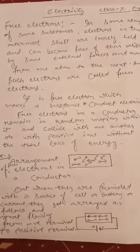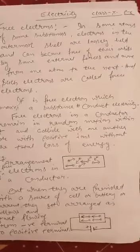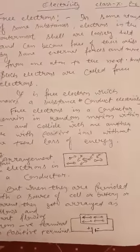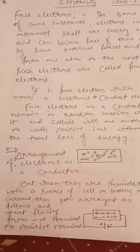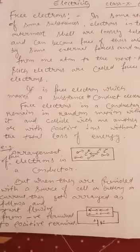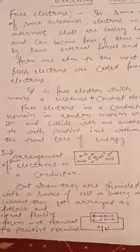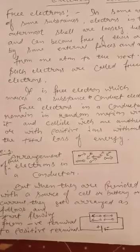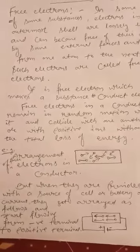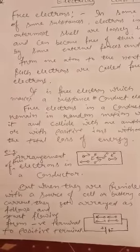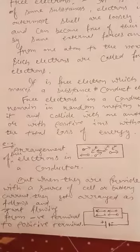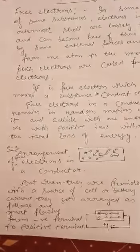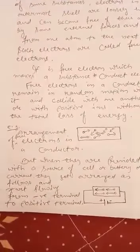It is free electrons which enable a substance to conduct electricity. Free electrons in a conductor remain in random motion within it and collide with one another or with positive ions without any total loss of energy. I have shown inside the bracket the arrangement of free electrons in a conductor — they remain in random motion.